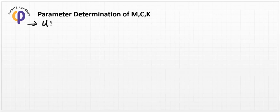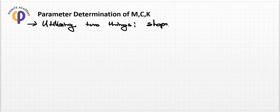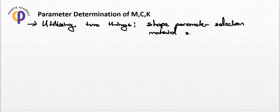In order to create a specific mass, spring, and damping ratio factor, we should utilize two things: shape parameter selection and material selection. If you are going to create a design with a solid model, like a cube or any device — the shape of something you want to design in SOLIDWORKS or any other programming technique.